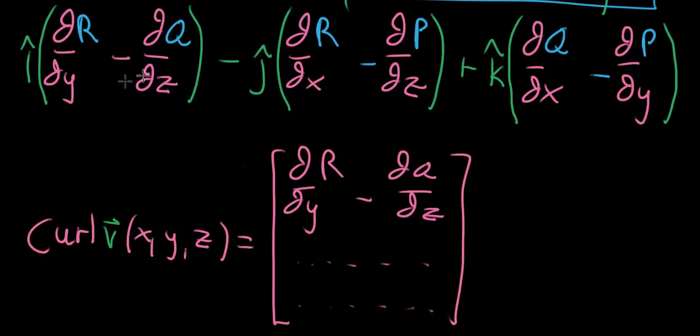But oftentimes when you're computing curl, you kind of switch to using this i, j, k notation. My personal preference, I typically default to column vectors and other people will write in terms of i, j, and k. It doesn't really matter as long as you know how to go back and forth between the two.